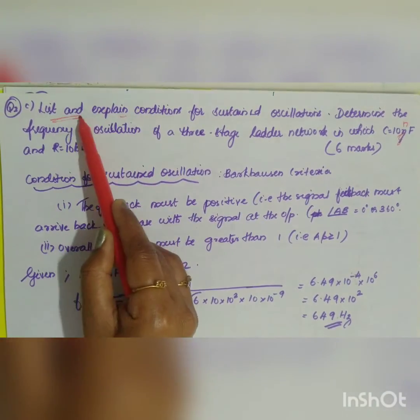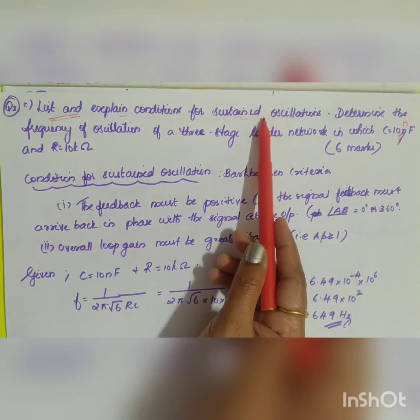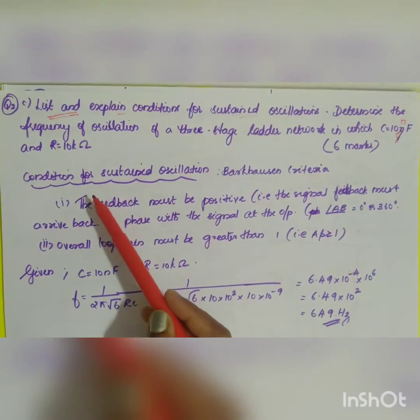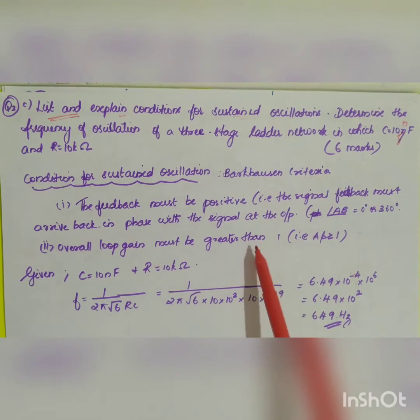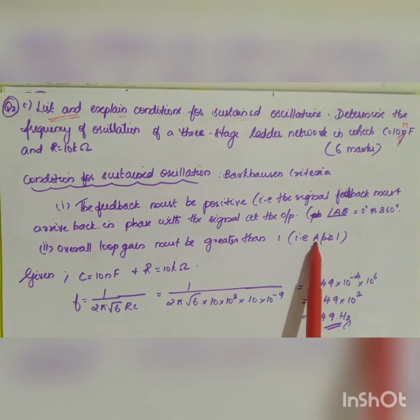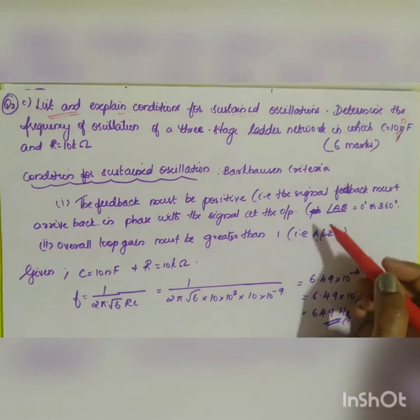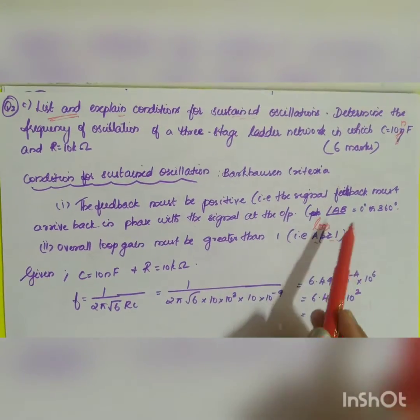For sustained oscillation, you have two conditions called the Burkhausen criteria. First condition: the angle should be equal to 0 degrees or 360 degrees. Second condition: the loop gain, which is your open loop gain A times your feedback gain beta, should be greater than or equal to 1.